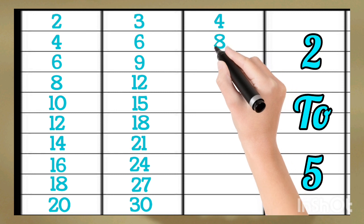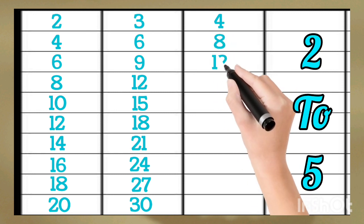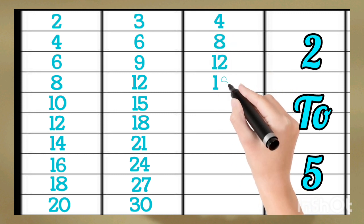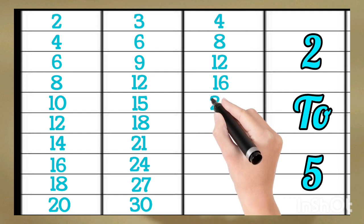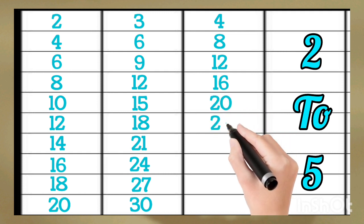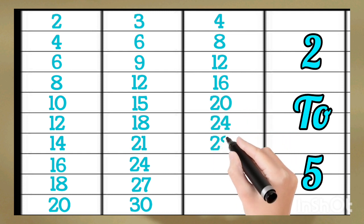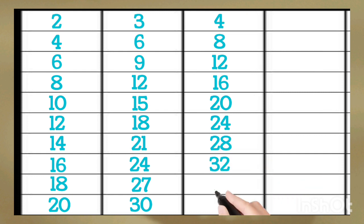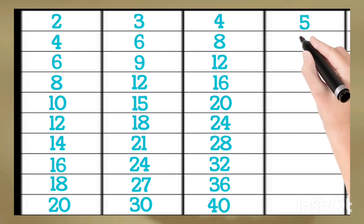4 times 2 is 8, 4 times 3 is 12, 4 times 4 is 16, 4 times 5 is 20, 4 times 6 is 24, 4 times 7 is 28, 4 times 8 is 32, 4 times 9 is 36, 4 times 10 is 40. 5 times 1 is 5,